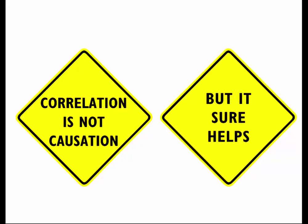Just because you see two things correlate with each other — like people who die tangled up in their bed sheets and cheese consumption in a country — that doesn't mean there's a causal link. People don't die in their beds because there's more cheese. You can have correlation, but correlation doesn't necessarily imply causation. Not everything that correlates is causally related.